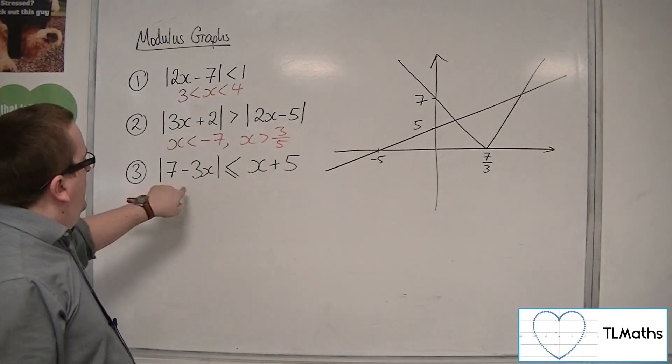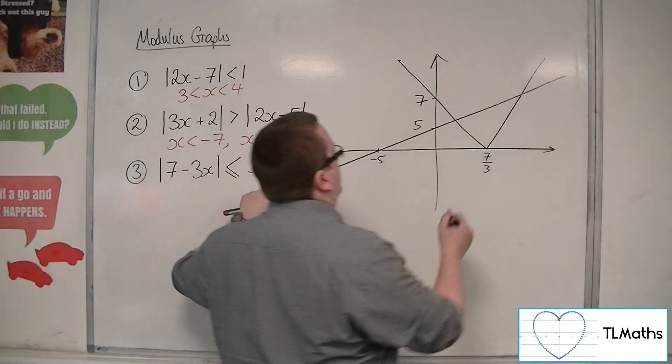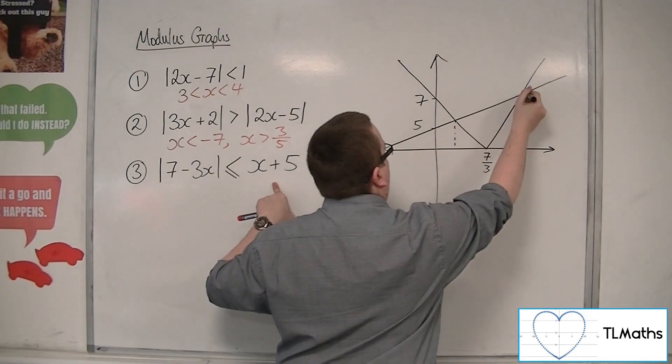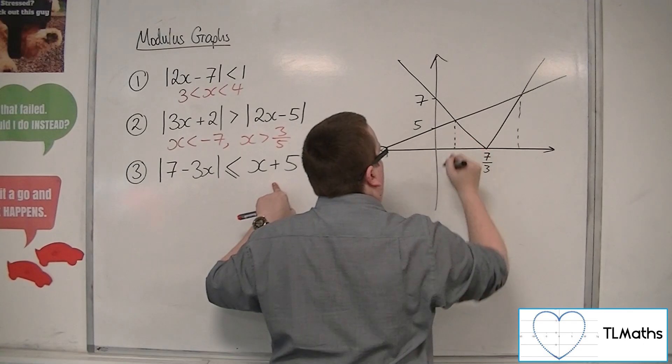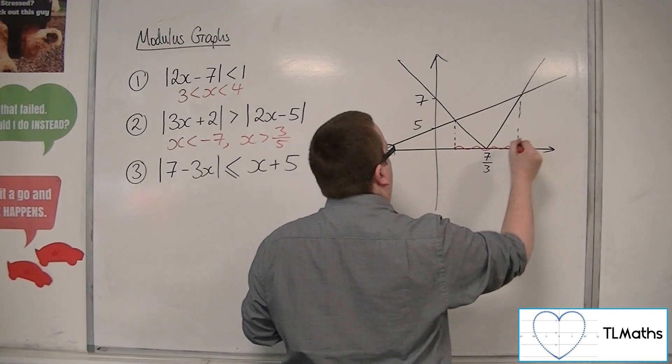So, that would be minus 5. So, where is the modulus graph below or equal to x plus 5? So, it's below it there. Okay. So, I need to work out those two values. And the region that I want is between them.